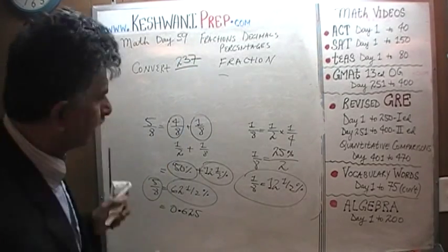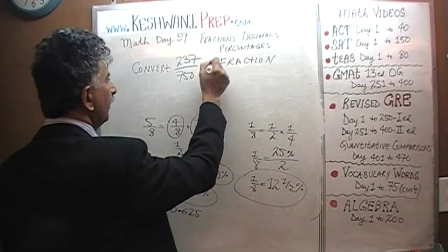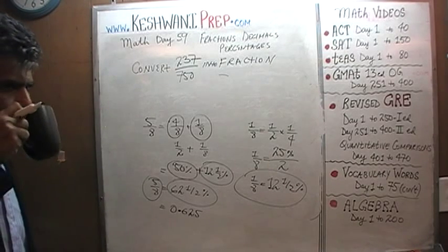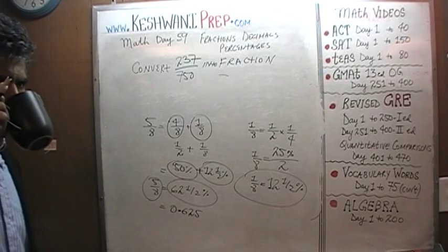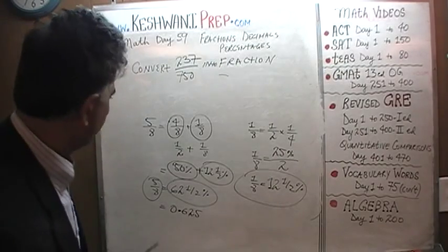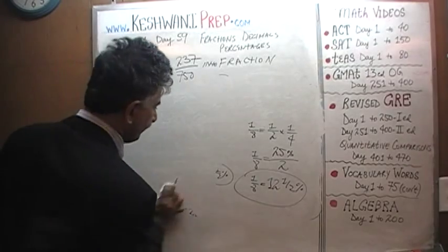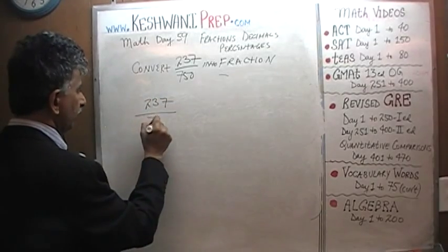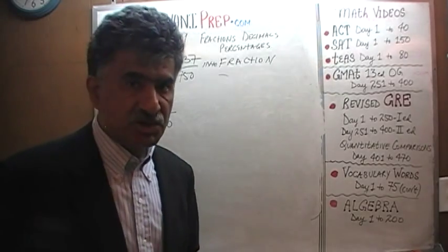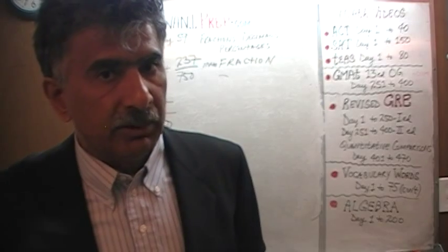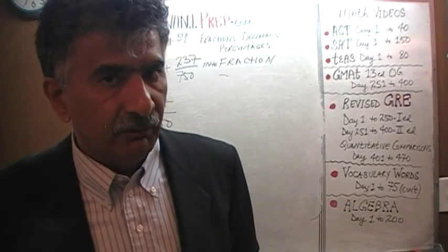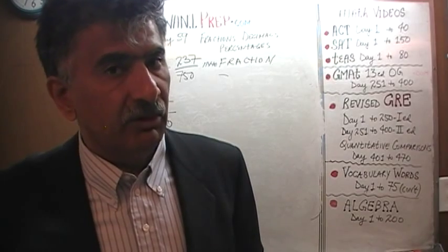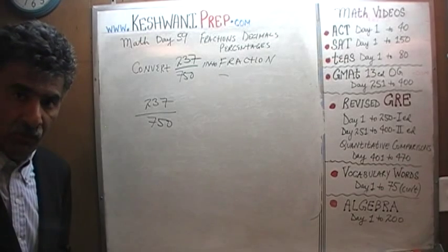Next problem: convert 237 over 750 into a decimal and percentage. Pause the video and do it yourself. The very first thing we should check, before we do any work at all, whenever a fraction is given to us and we're asked to convert it, is to make sure the fraction is itself in its most reduced form. Is 237/750 in its most reduced form, or can we reduce it further?